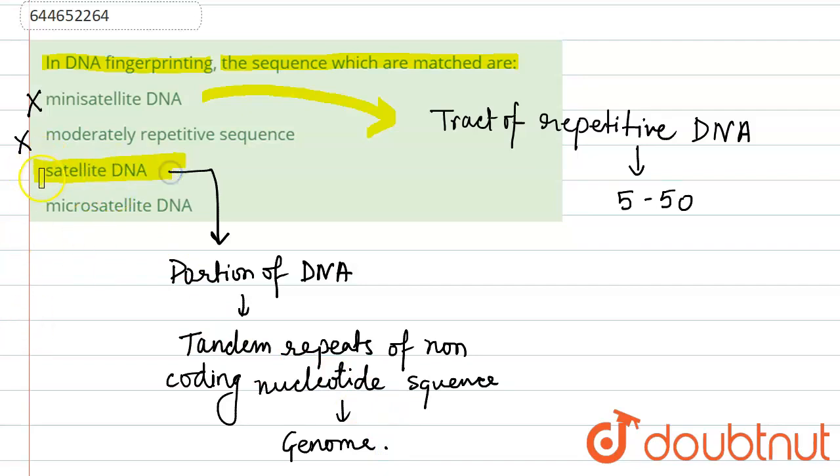So option C is correct. And D, microsatellite, is another name of minisatellite.